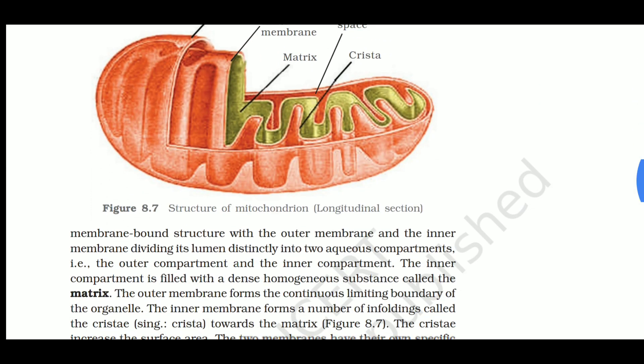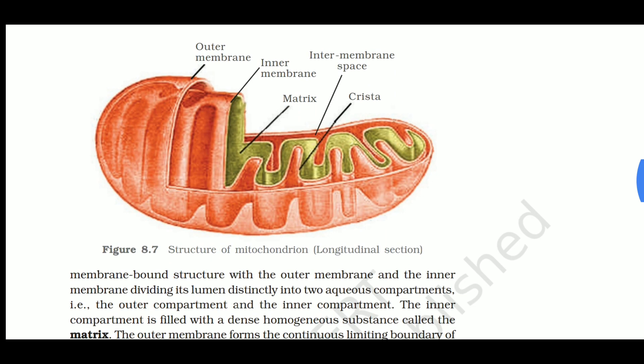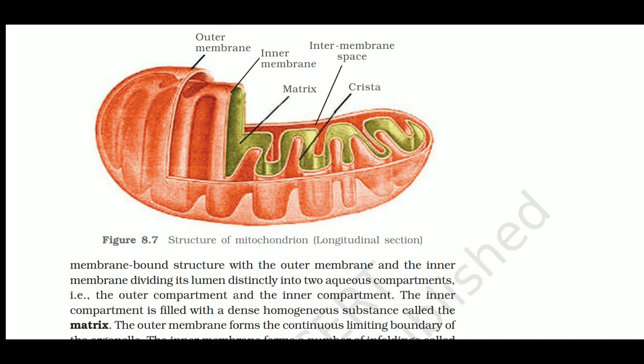Each mitochondrion is a double membrane-bounded structure. Three organelles are double membrane-bounded: nucleus, mitochondria, and chloroplast. Importantly, mitochondria and chloroplast are semi-autonomous cell organelles because they have their own DNA and their own ribosomes.